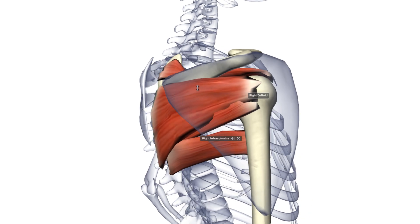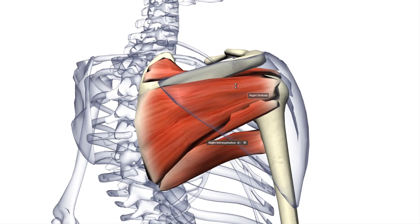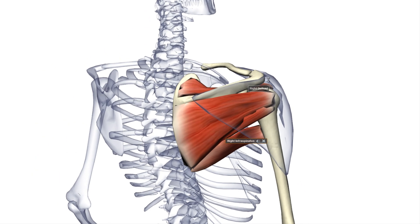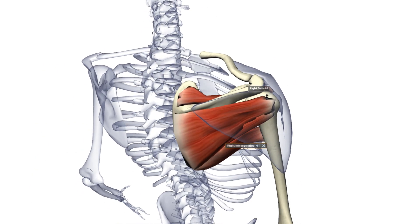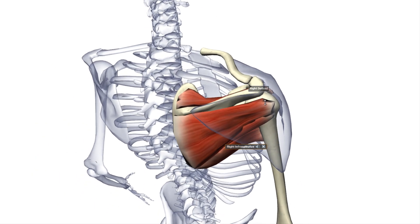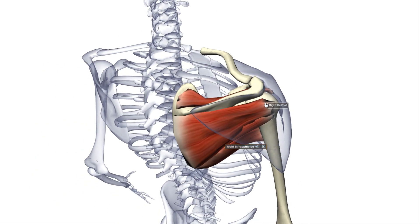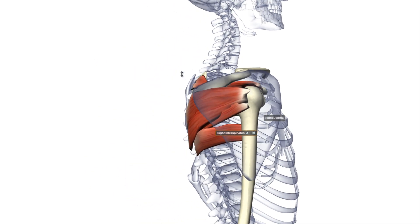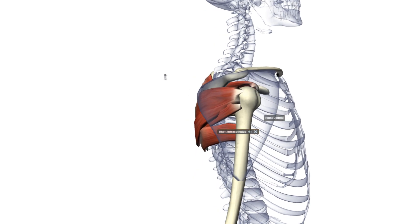It is innervated by the suprascapular nerve and the function of this muscle is to laterally rotate the arm and to adduct the arm. It also serves to stabilize the humerus.